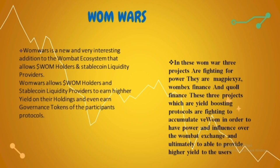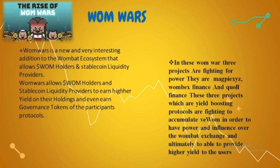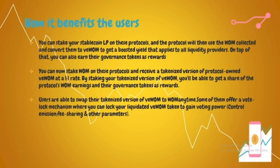These three projects, which are yield-boosting protocols, are fighting to accumulate vWOM in order to have power and influence over Wombat Exchange, and ultimately to provide higher yield to users. You can stake your stablecoin LP on these protocols, and the protocols will then use the WOMB collected and convert them to vWOM to get boosted yield, which applies to all liquidity providers. On top of this, you can also earn governance tokens as rewards.